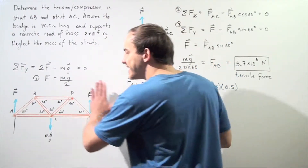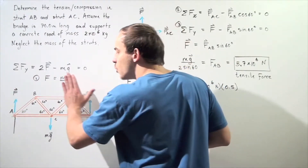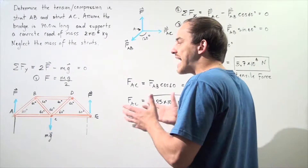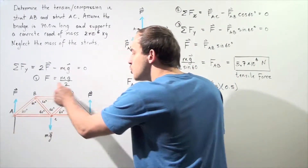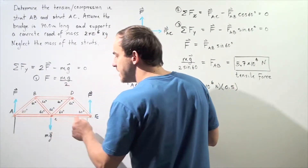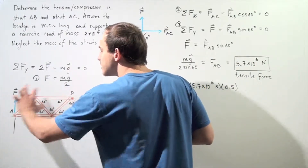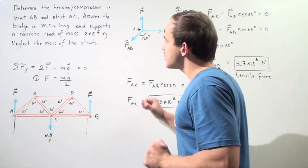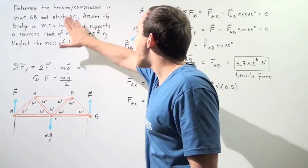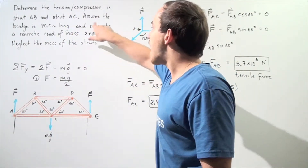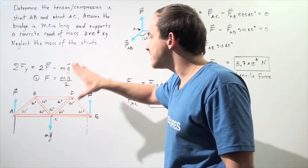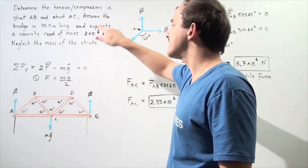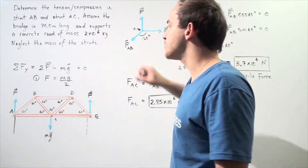We're only examining the side view of the bridge. The bridge is three-dimensional and is composed of two such trusses, so we examine only one truss, meaning we consider only half of the total mass. Our actual mass M is 1×10⁶ kilograms — half of the full quantity.